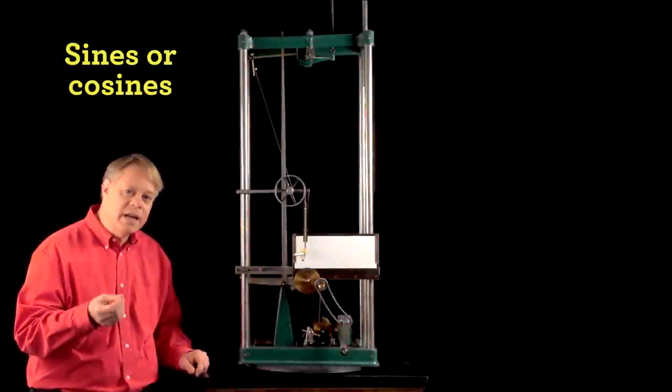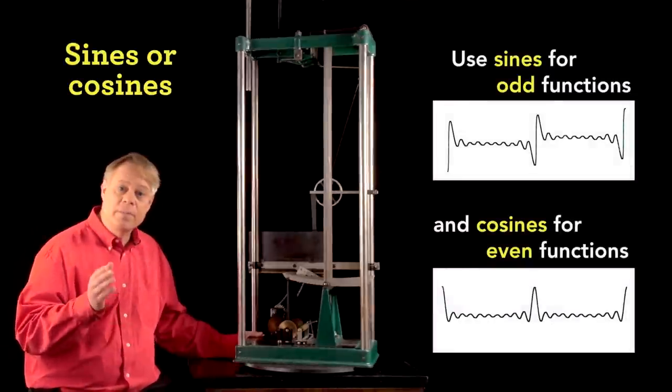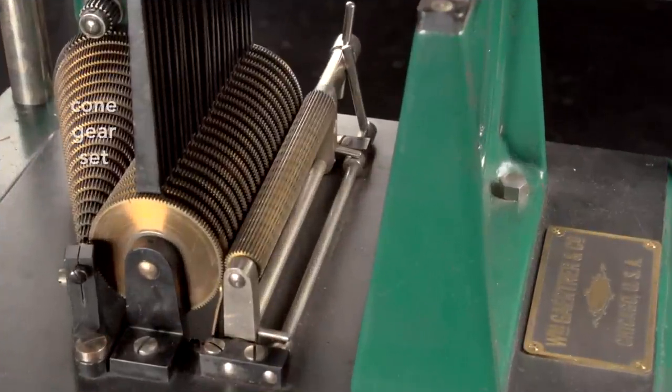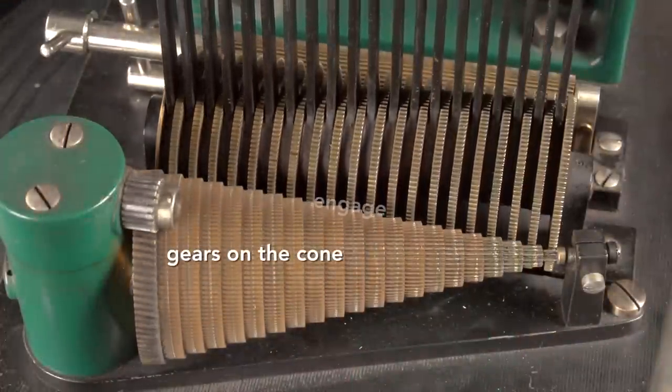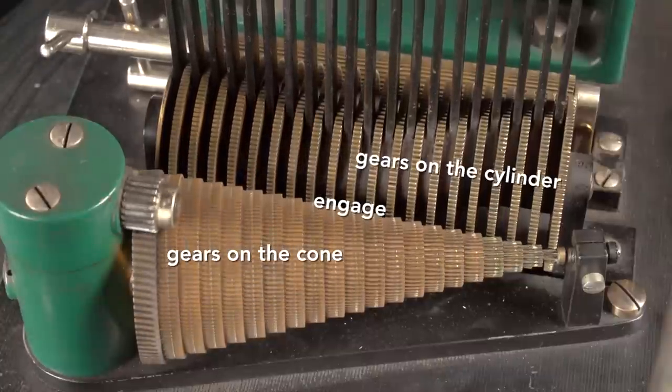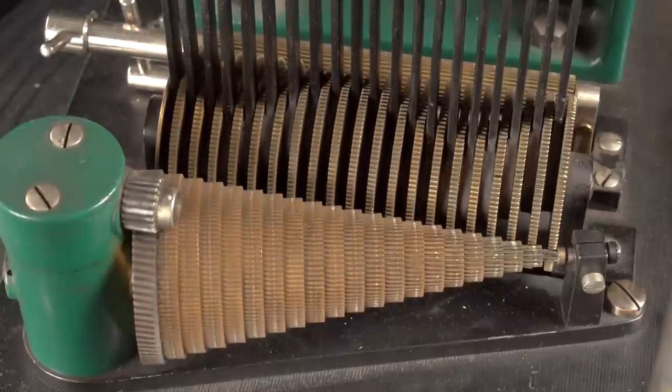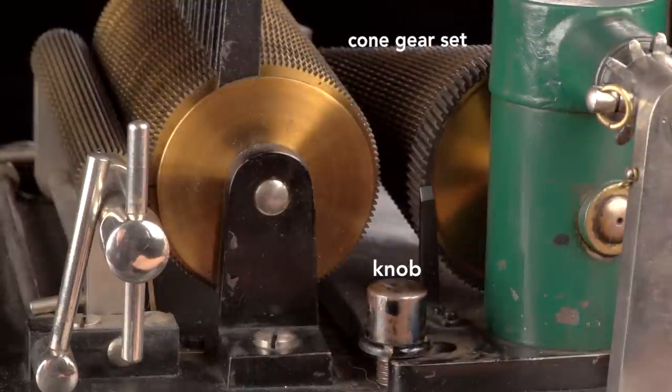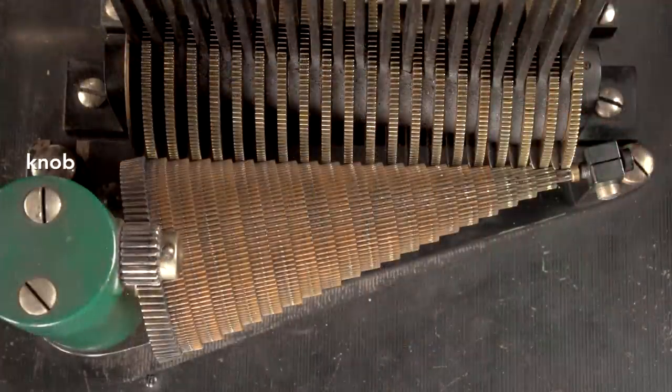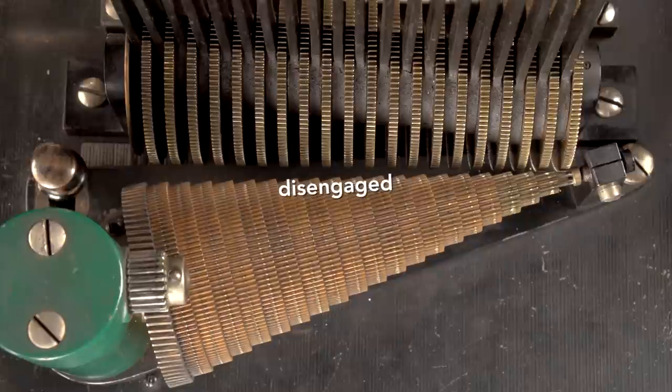We can set the analyzer to use either sines or cosines. We do that by configuring these gears: the cone gear set, the cylinder gear set, and the pinion gear. Recall that when we use the machine, the gears on the cone set engage the gears on the cylinder. To change between sines and cosines, we need to disengage the two sets of gears. Unscrewing this knob allows the cone gear set to swing away from the cylinder. You can see it more easily from the top. This action completely disengages the cone and cylinder gears.